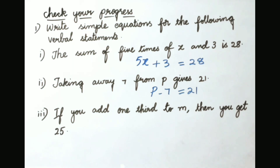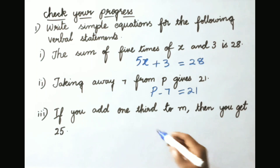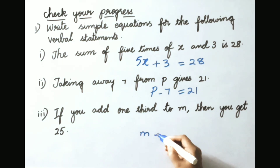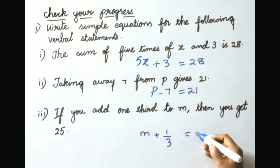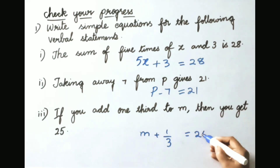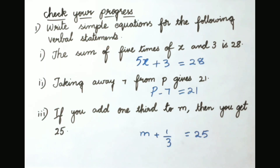Third: if you add one third to m then you get 25. For m, if you add one third, that is 1 by 3, we will get 25. So the simple equation is m plus 1 by 3 equals to 25.